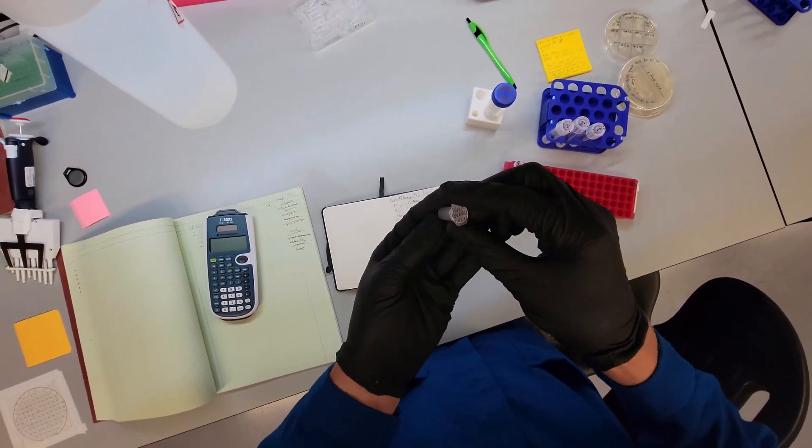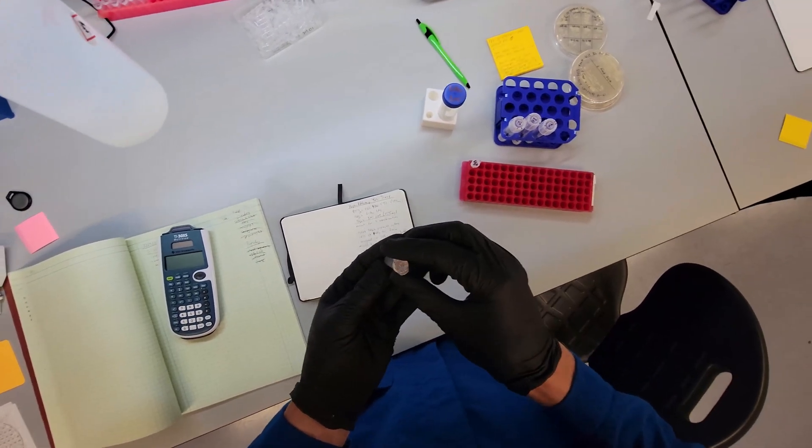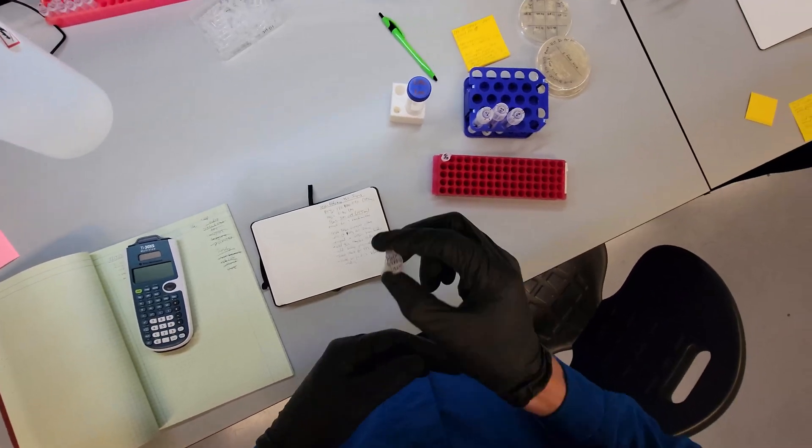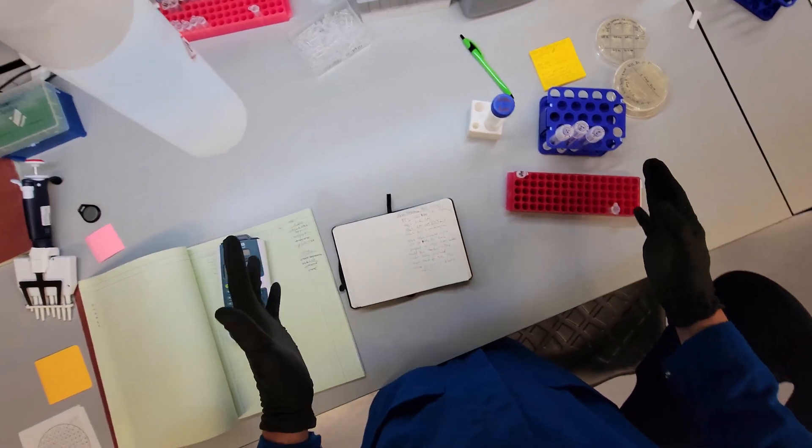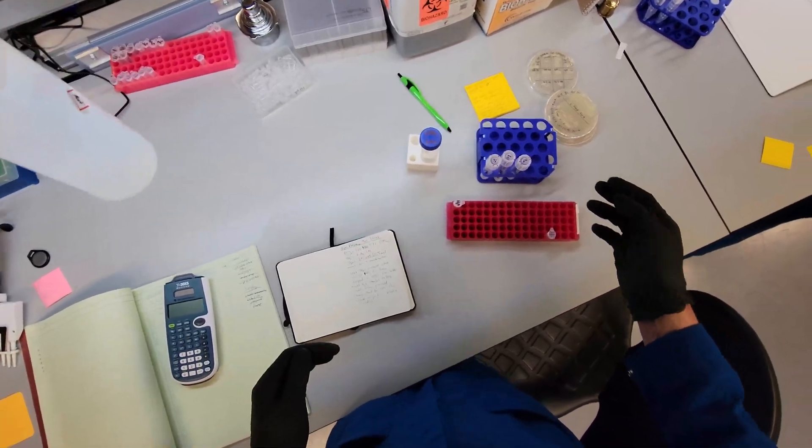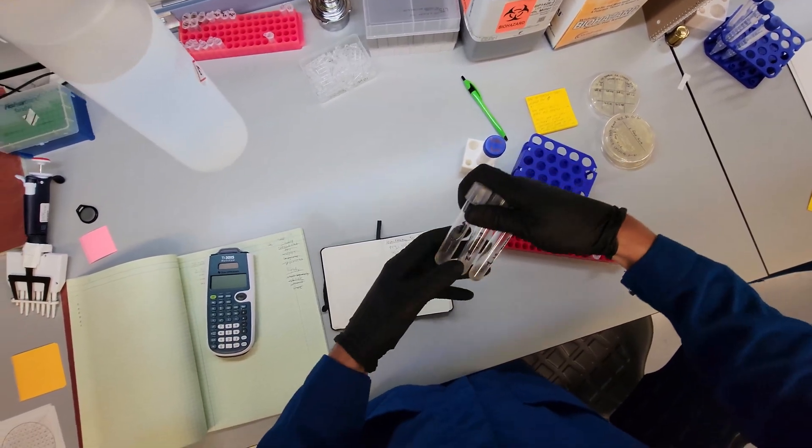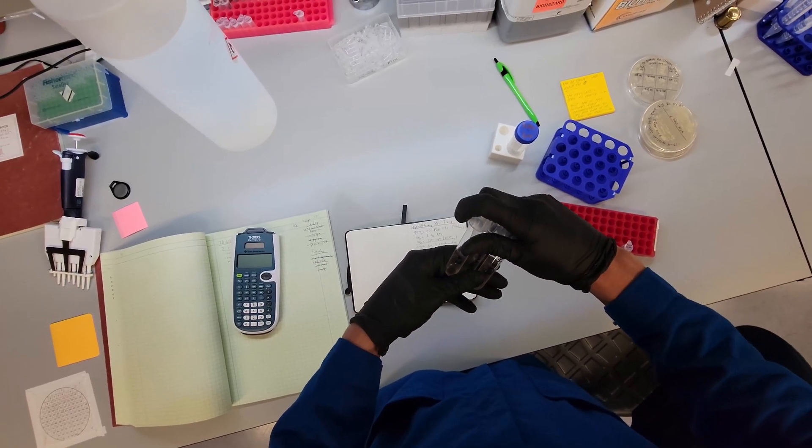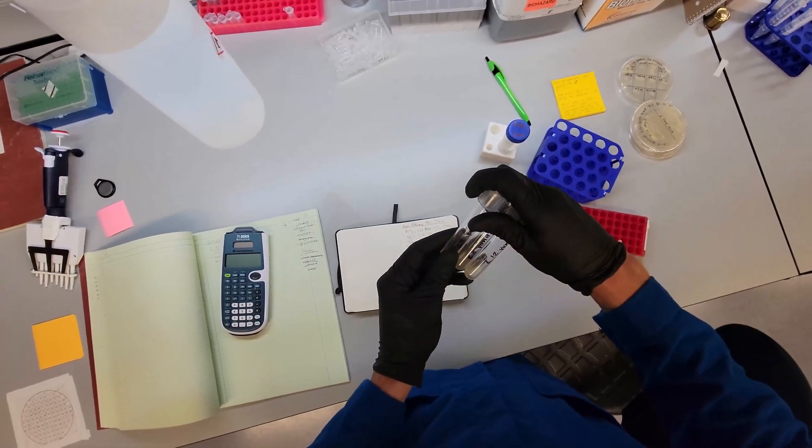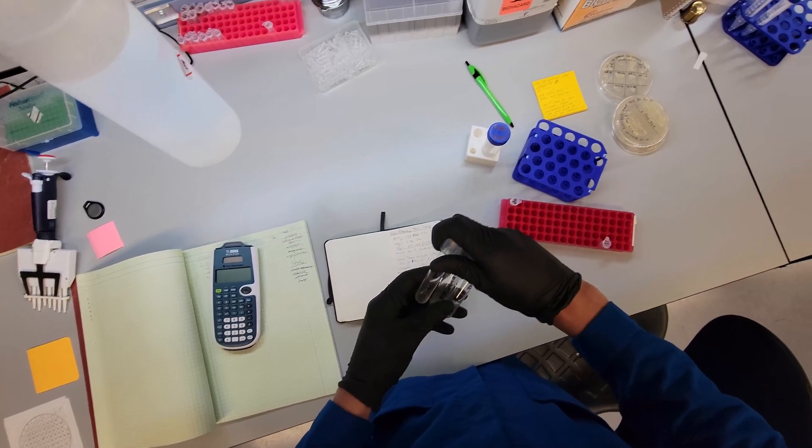So here's our plasmid here that we want to transform. It has a URA-3 selective marker on it. So we'll end up plating in SD-U media, synthetic media without uracil. And then these are the strains that we're going to be transforming that plasmid into. Our shorthand is Z4, Z8, and Z12.